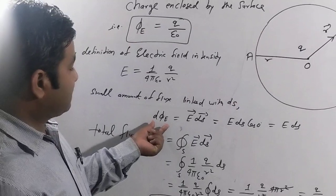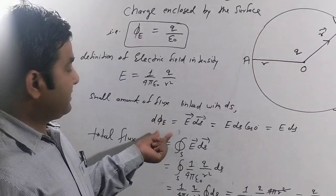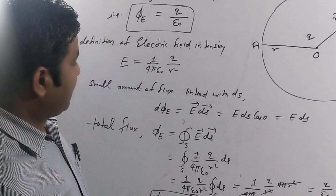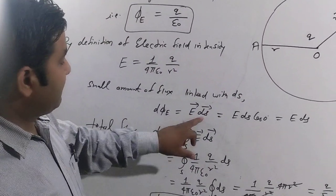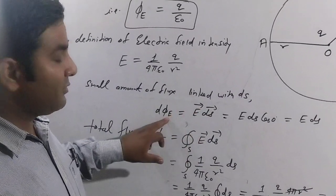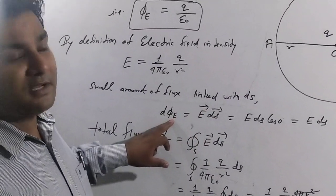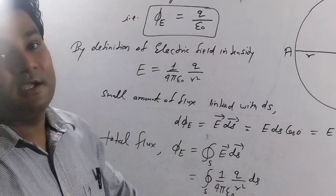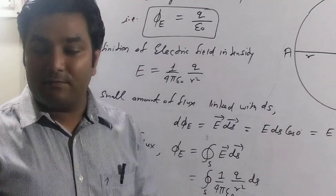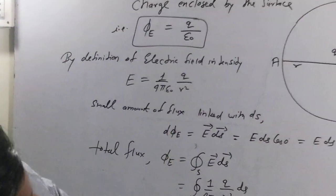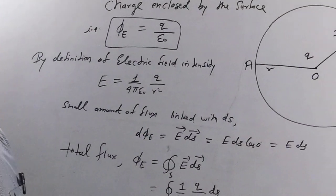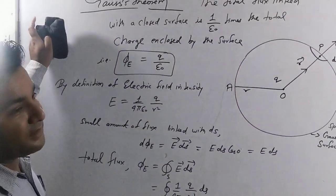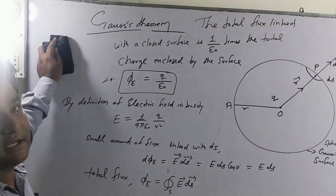This is the proof of Gauss's theorem — a very simple derivation. The only concept you have to utilize is that of flux: intensity multiplied by surface area for a small area element gives small flux, and then integrating the small amount of flux gives the total flux.